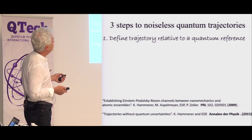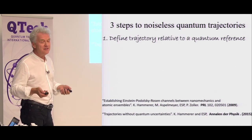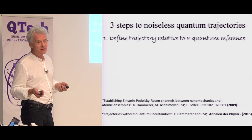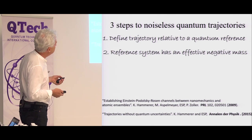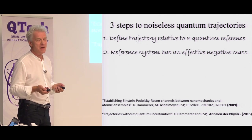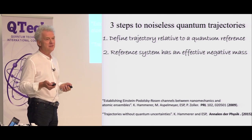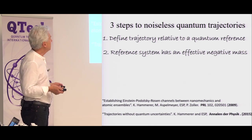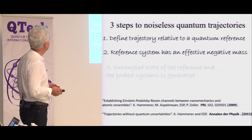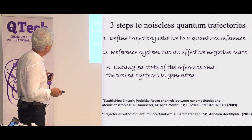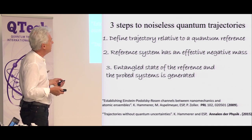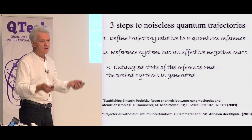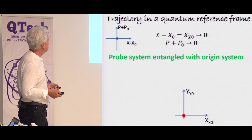So we want our quantum trajectory to look like classical trajectory so that we can follow an object with unlimited accuracy. And we need three steps for that. First of all, you need to define the motion relative to some special reference frame, which will be a quantum reference frame. And this reference system should have an effective negative mass. I'll tell you about it real soon. And you'll see that it's not science fiction. And finally, you need to create a quantum entangled state of the reference frame and the probed system.